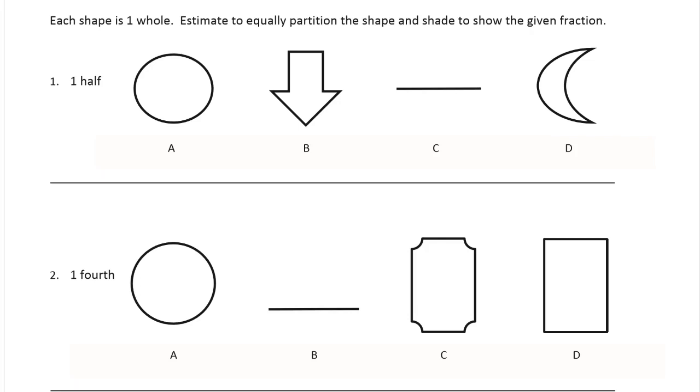So this row we're going to make everything into halves. Circle's pretty easy. I'm just going to go through the center right down the middle. And one half means I'm going to shade one of the two halves.